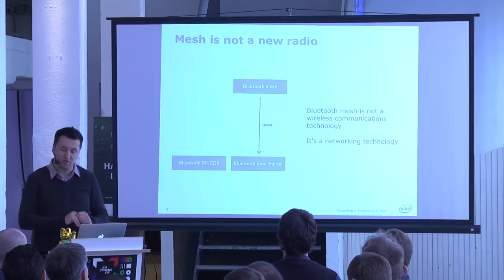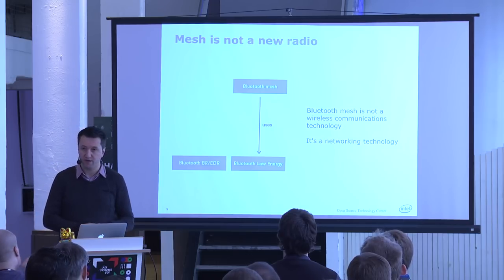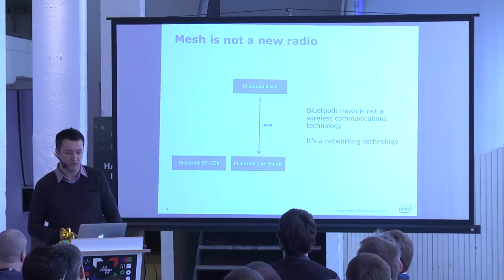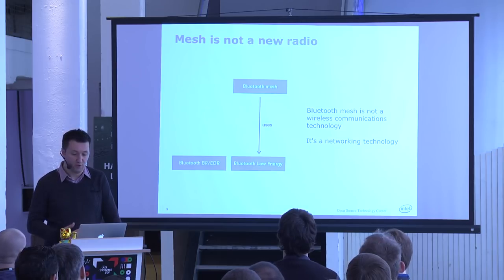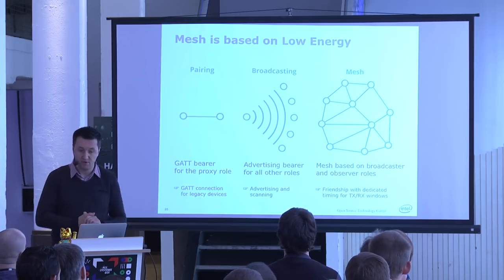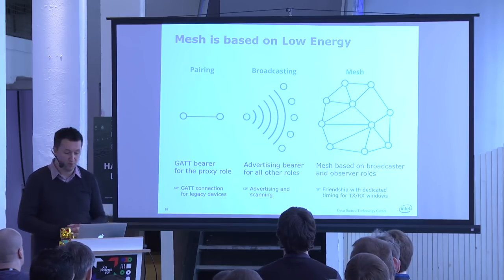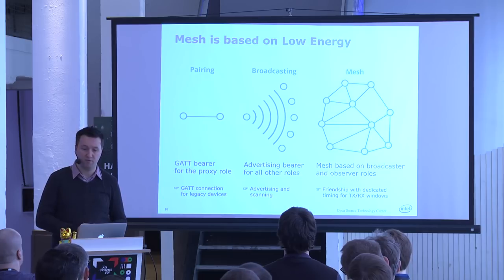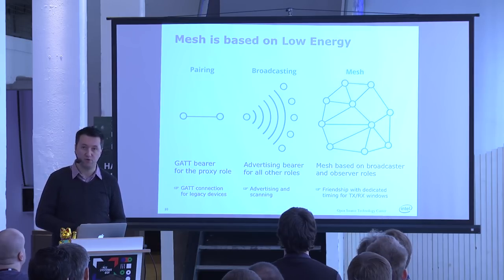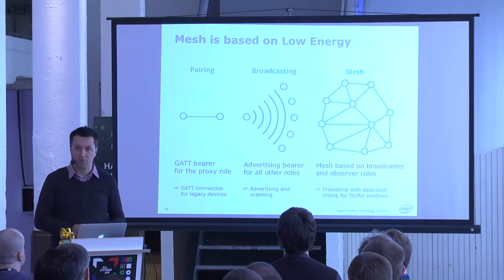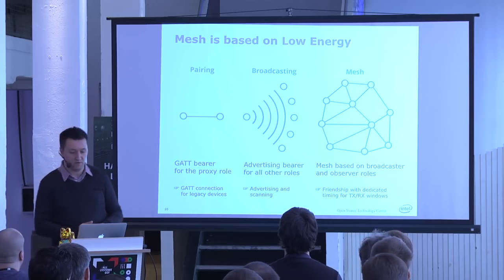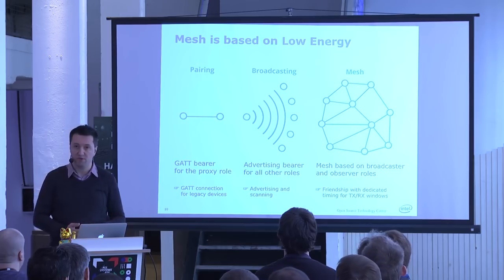Importantly, mesh is not a new radio. We didn't build a new radio or a new MAC layer — we just built a network topology on top of Bluetooth Low Energy as the basic radio. Classic pairing and point-to-point can be used for backwards compatibility: if a device doesn't know how to do broadcasting or mesh, you can use a point-to-point connection as a single-hop entry into the network. So your current phone with an application can get access to a mesh network.